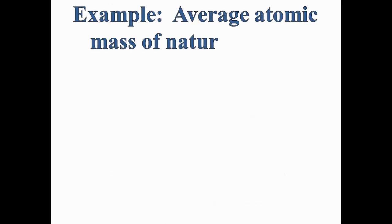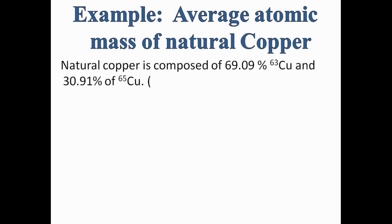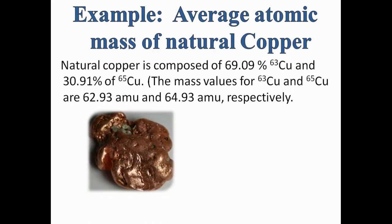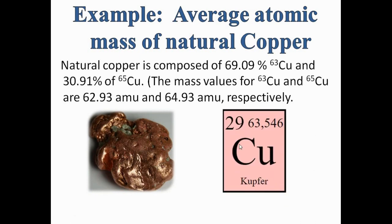Now let's look at another example: the average atomic mass of natural copper. Natural copper is composed of 69.09% copper-63 and 30.91% copper-65. The mass values of copper-63 and copper-65 are 62.93 and 64.93 AMU respectively. From the periodic table, copper has an atomic number of 29 and an atomic mass of 63.506, which we will now calculate using the same method.